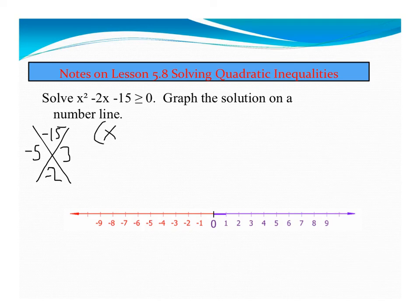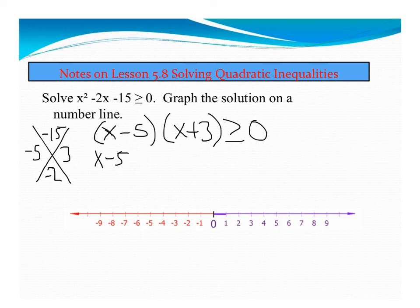So I'm going to have x minus 5, x plus 3, greater than or equal to 0, and now I'm going to set each one of these parts equal to 0 and do the same process as before.